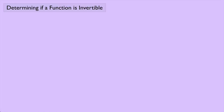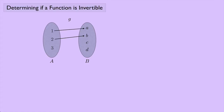Let's look at another example. Suppose I have the set A, which is the numbers 1, 2, and 3, and the set B, which has the letters A, B, C, and D. This time I'm going to define a function G, which maps 1 to A, 2 to B, and 3 to D. In this case, G is injective but not surjective. It's injective because nothing in set B has more than one thing mapped to it. But it's not surjective because the element C doesn't have anything mapped to it.